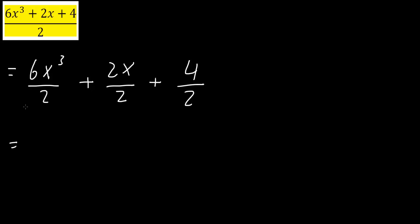So now I have this in three parts. So 6 divided by 2 is 3, x cubed remains the same. Plus 2 divided by 2 is 1, x remains the same. Since we're not dividing by x, plus 4 divided by 2 would be 2. And so this right here is the first answer.